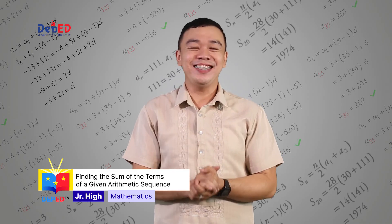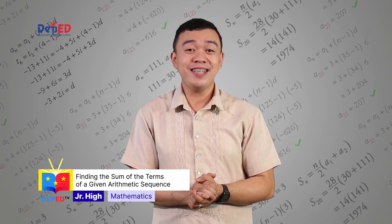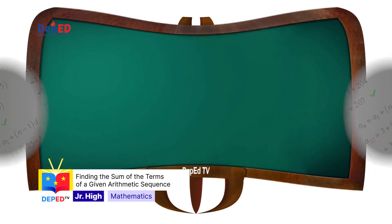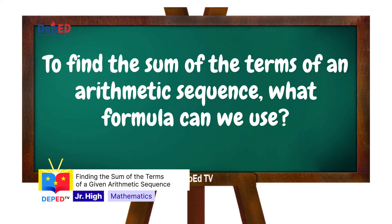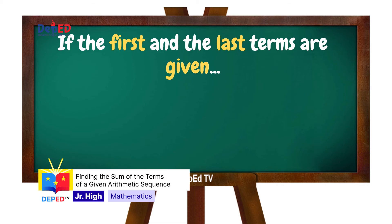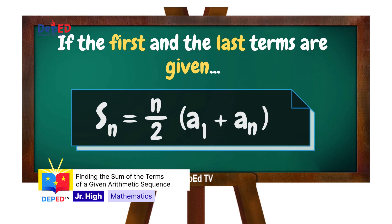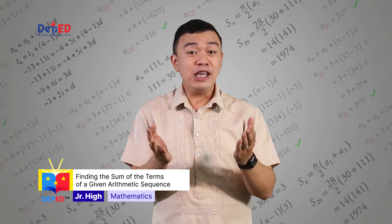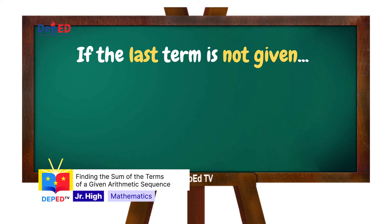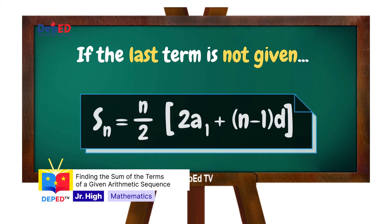Congratulations, dear students! Let us see what you have learned from today's episode. To find the sum of the terms of an arithmetic sequence, if the first term and last term are given, we use the formula S sub n equals n divided by 2 times (a sub 1 plus a sub n). If the last term is not given, we use the formula S sub n equals n divided by 2 times the quantity (2 times a sub 1 plus (n minus 1) times d).